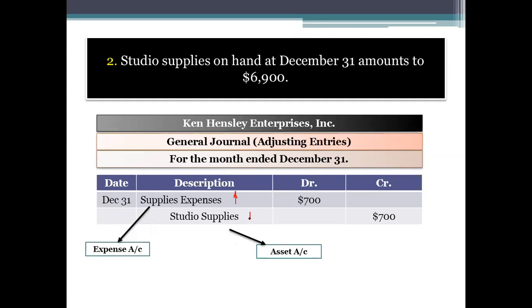And the balance of studio supplies — the asset account — is decreased by $700. Before it was $7,600; now it is $6,900.